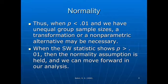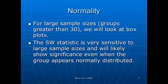If p is less than 0.01 in the Shapiro-Wilk statistic, you may need to consider some other alternatives. For large sample sizes — when you have groups of 30 or more — look at the box plots, because the Shapiro-Wilk statistic is very sensitive to large sample sizes and it's likely going to show a non-normal distribution when it is actually quite normal. So for large sample sizes, you just eyeball it — look at your box plots.